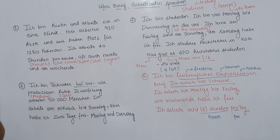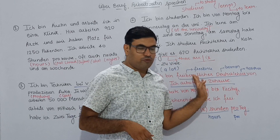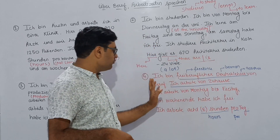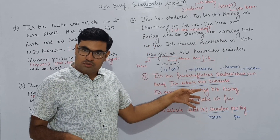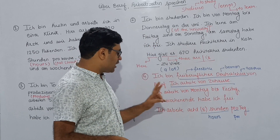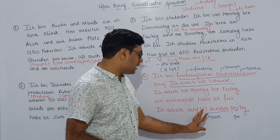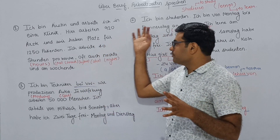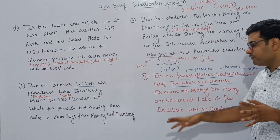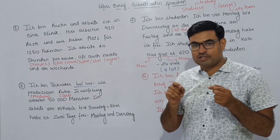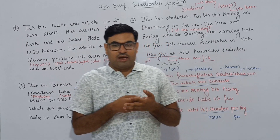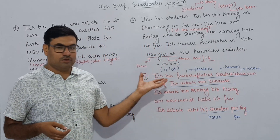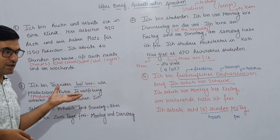'Ich arbeite von Zuhause.' I work from home — Zuhause means home. This is a very good statement for saying that I work from home. 'Ich arbeite von Montag bis Freitag.' I work from Monday to Friday. 'Am Wochenende habe ich frei.' On weekends I have free time. 'Ich arbeite 8 Stunden pro Tag.' I work 8 hours per day — pro Tag means per day, Stunden means hours.